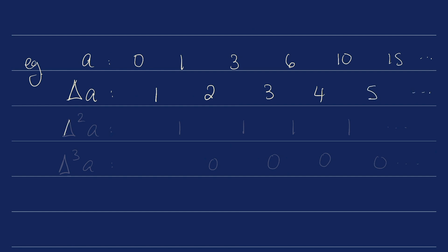We can apply this again: delta squared a, which is going to be the differences of delta a. So we're going to get 1, 1, 1, 1, etc. And then delta cubed of a, the differences of delta squared of a, is going to be 0, 0, 0, 0. Then it wouldn't really make sense to continue.